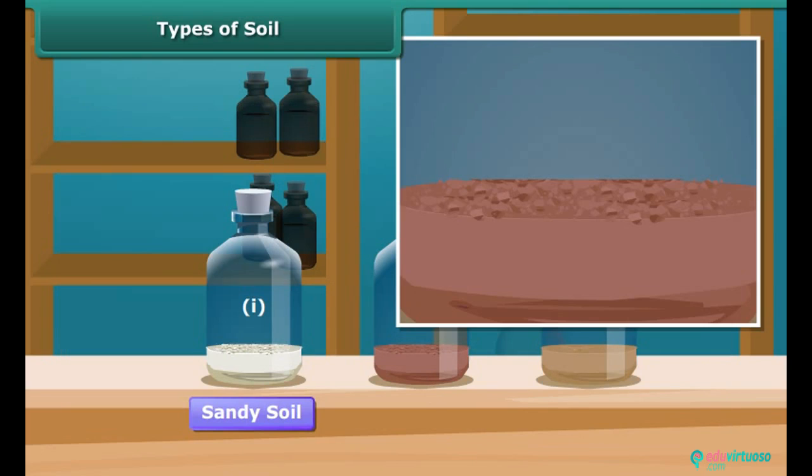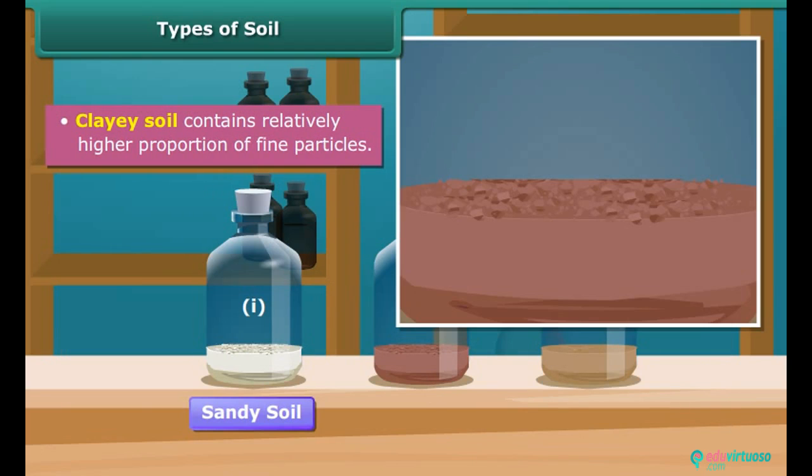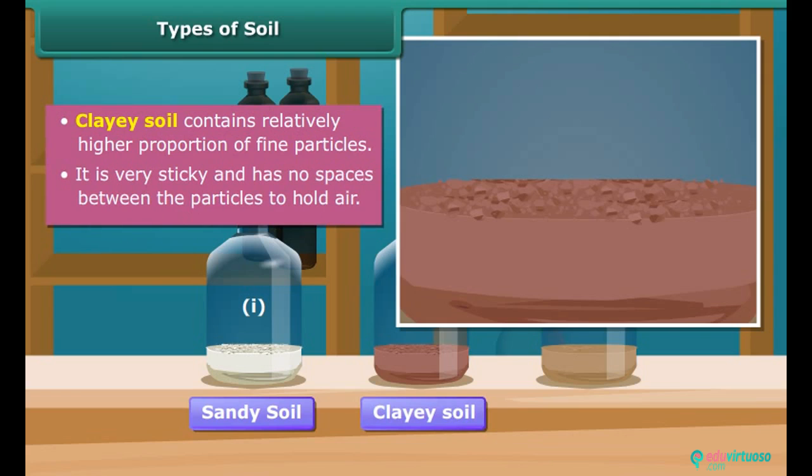Let's observe second sample closely. It contains relatively higher proportion of fine particles. So it is a clayey soil. It is very sticky and has no spaces between the particles to hold air. Therefore plants cannot grow properly in it.